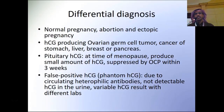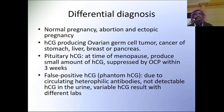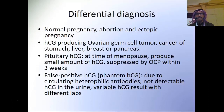Differential diagnosis for high beta-HCG levels includes normal pregnancy, abortion, ectopic pregnancy, or ectopic beta-HCG-producing tumors such as ovarian germ cell tumor, and cancers of the stomach, liver, breast, and pancreas.